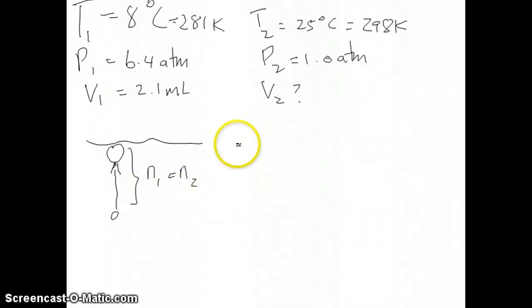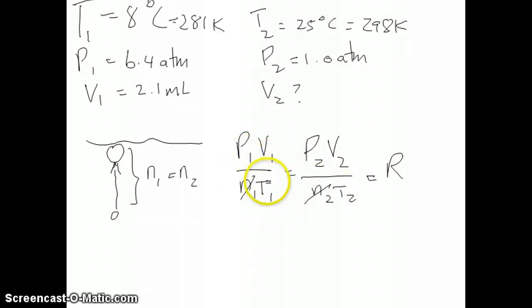So then if you were to write out your ideal gas equation, remember that PV over nT equals to R. But in this case, we have conditions one, and that has to equal to P2V2 over n2T2. And all of these has to equal to your gas constant. I just said that n1 and n2 are equal to each other, that means that they will cancel out. So then we're left with just P1V1 over T1 equals P2V2 over T2.